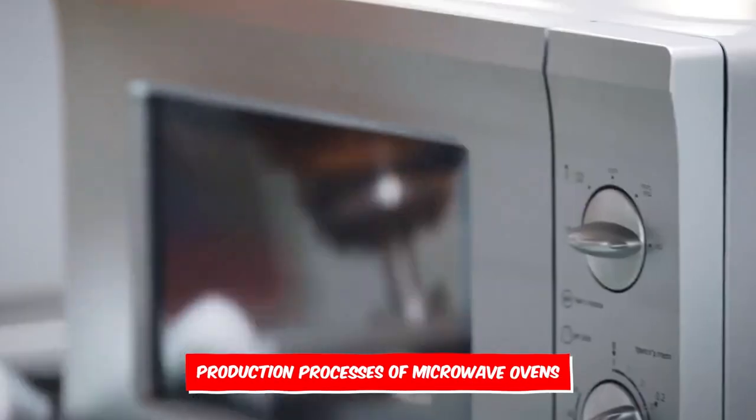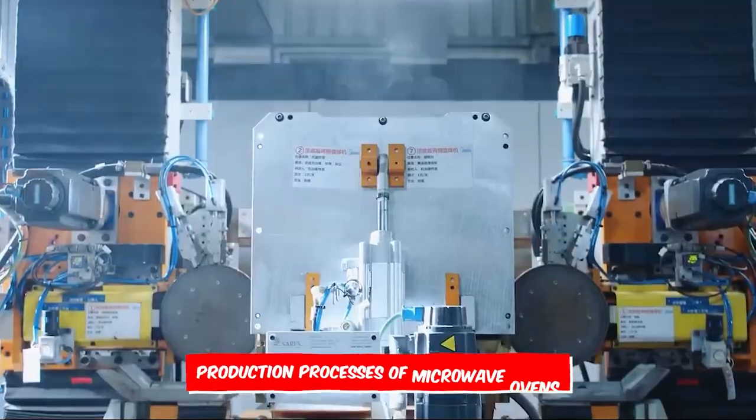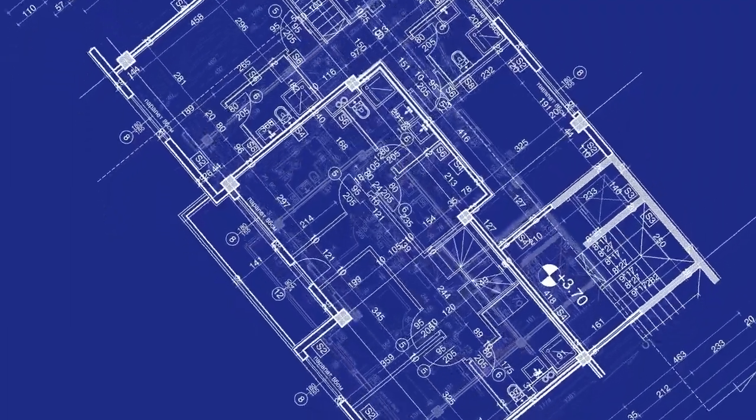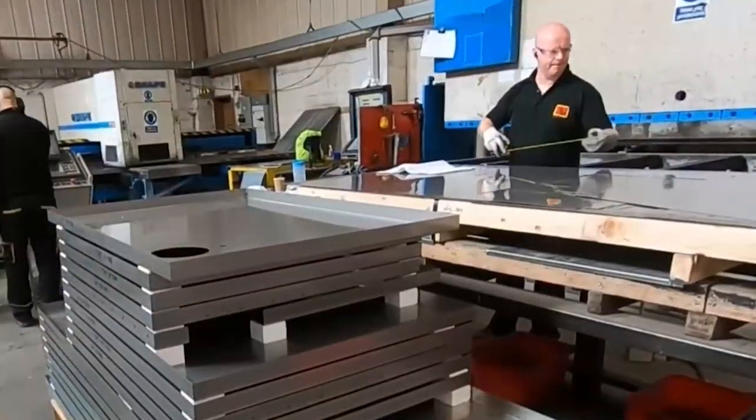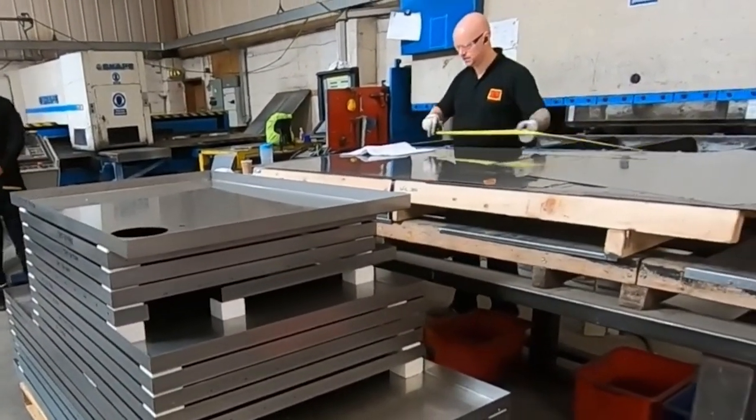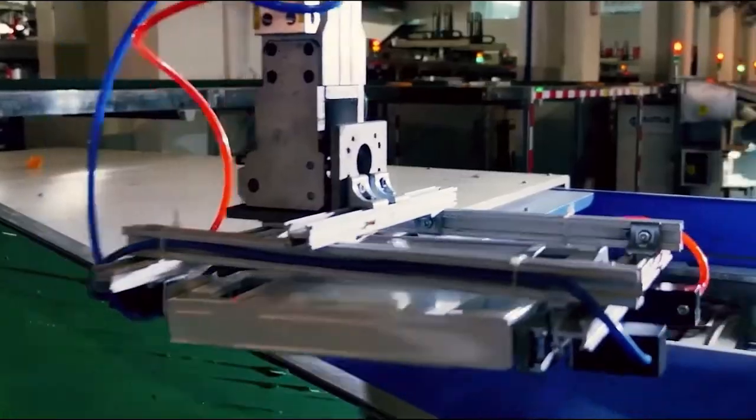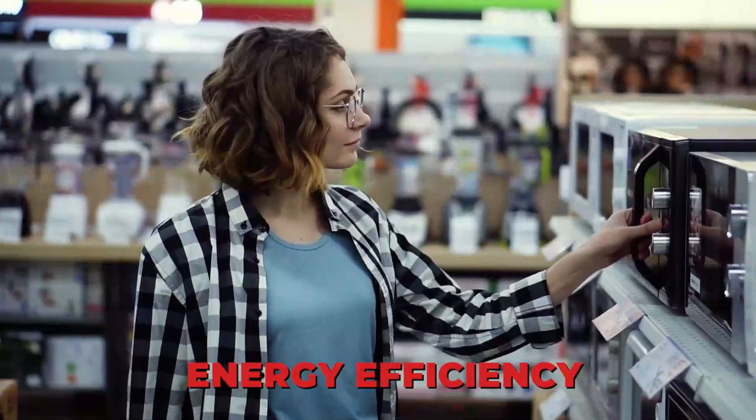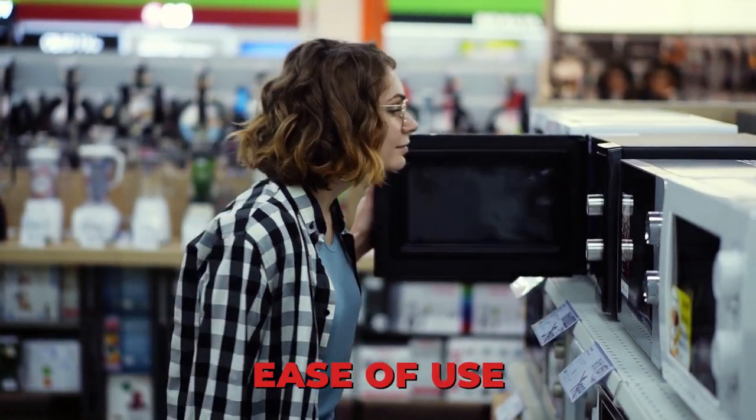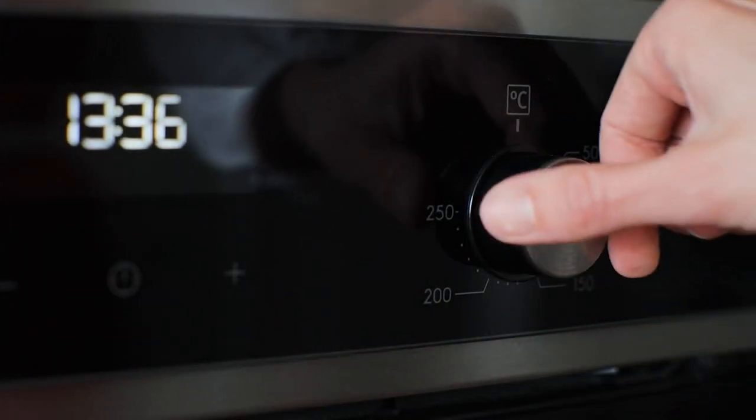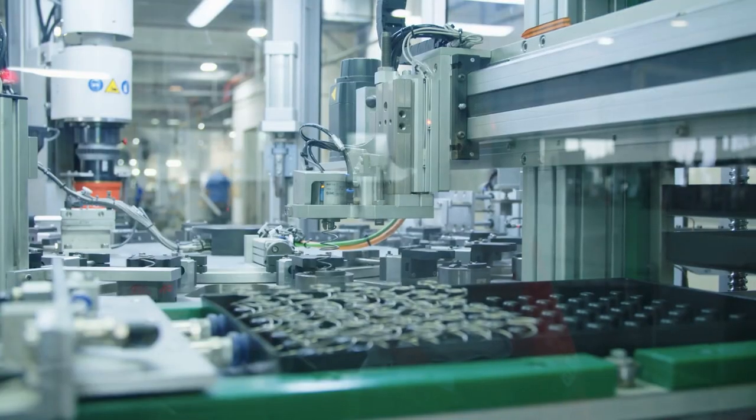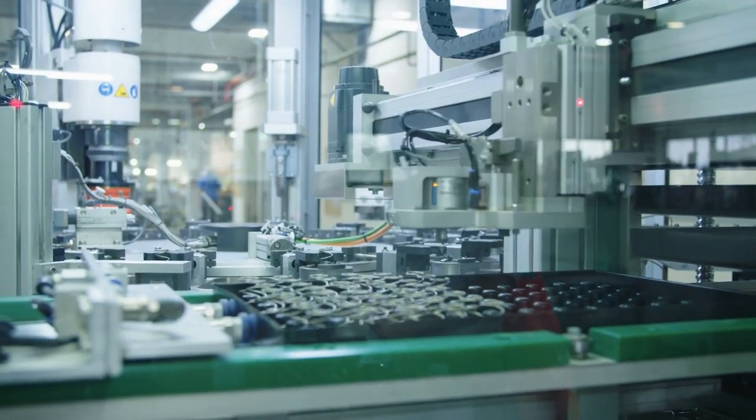Now let's move on to the production process. Every microwave begins with an idea. Designers and engineers work closely to turn this idea into a detailed blueprint. They consider everything from the microwave's size and power to its safety features and user interface. Energy efficiency, cooking speed, and ease of use are their top priorities. They use advanced software to model their designs, ensuring that every component fits perfectly together.